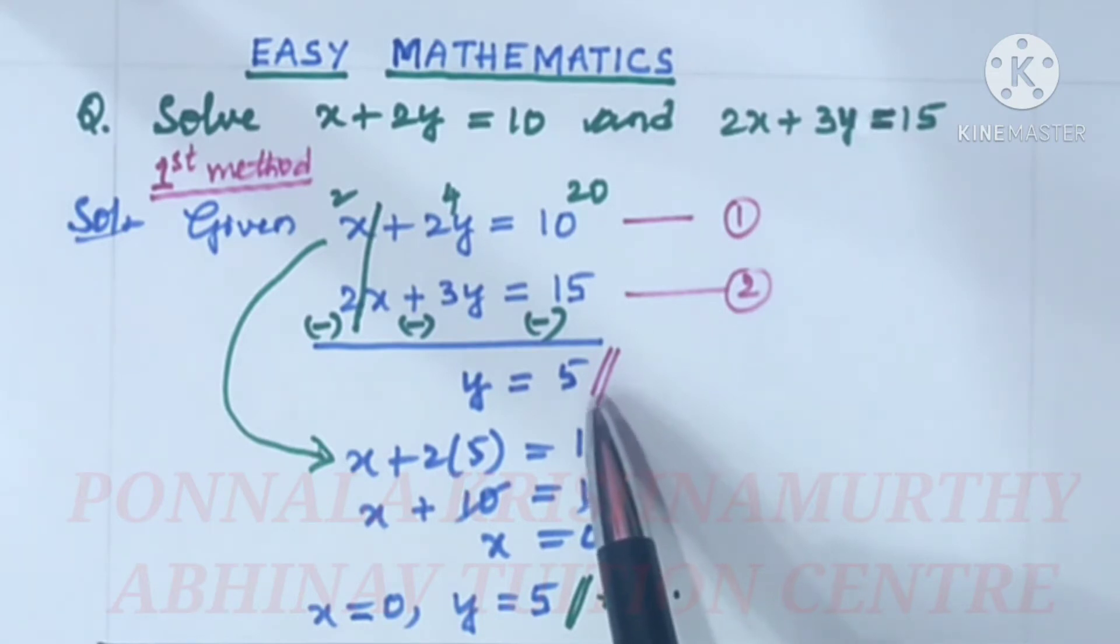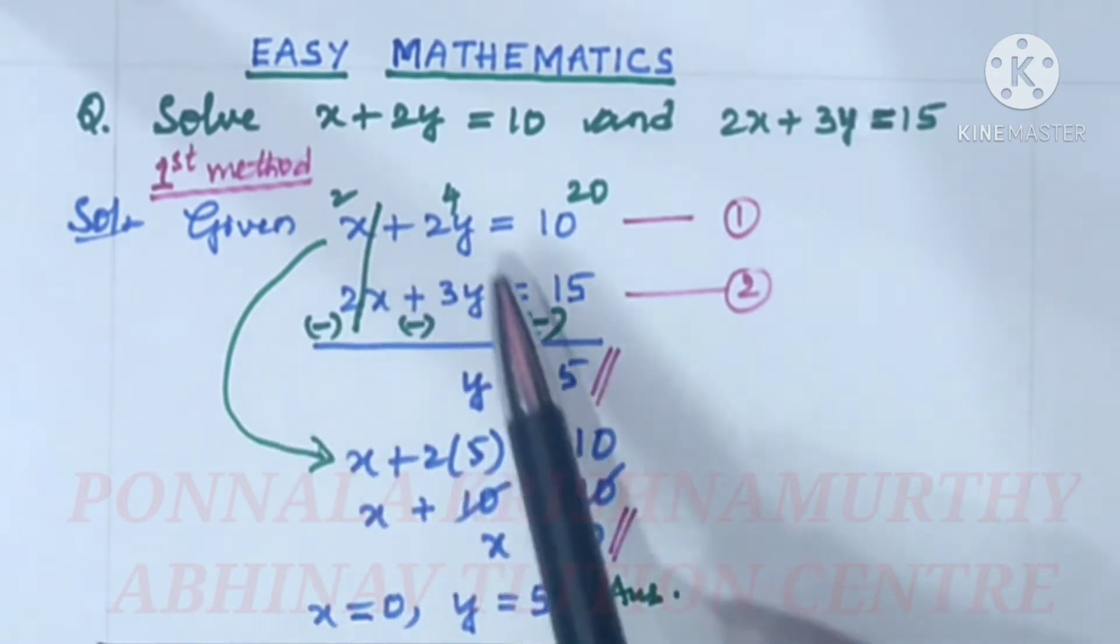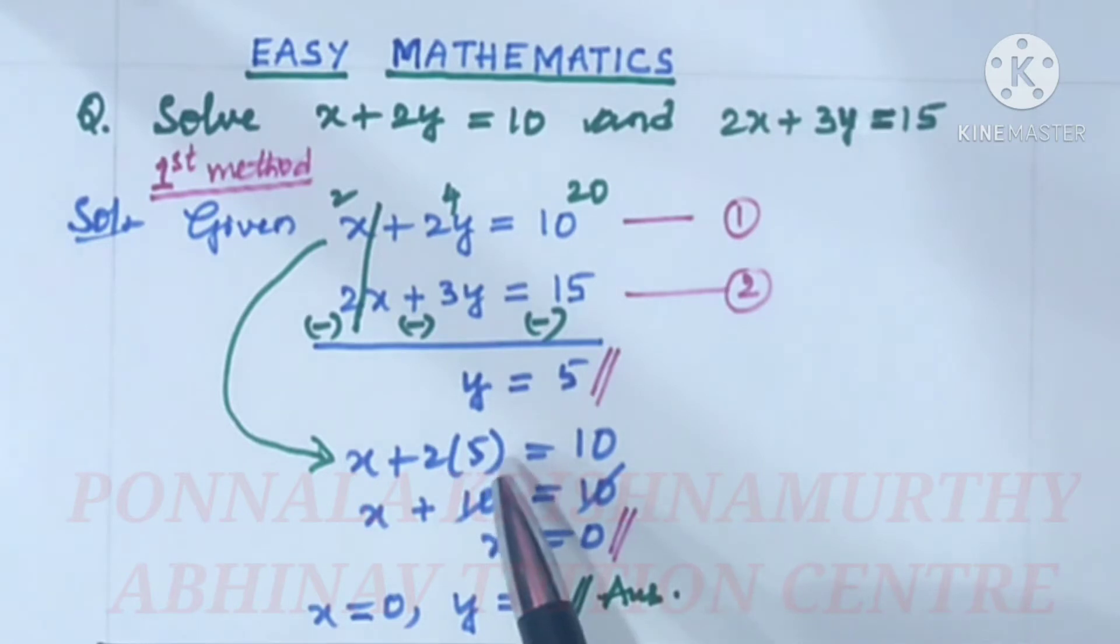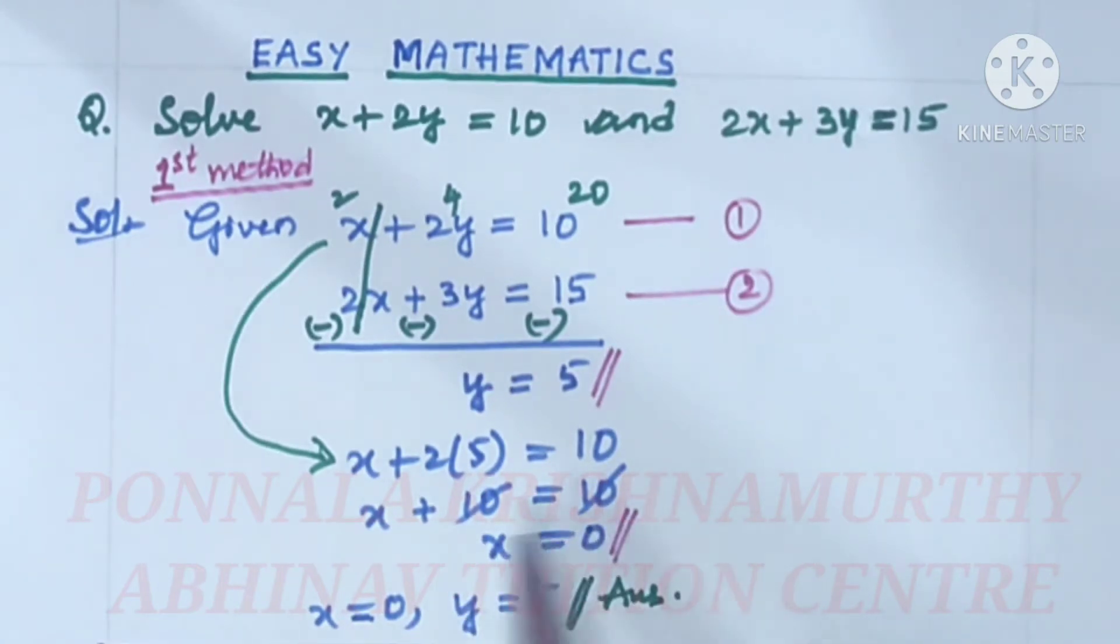Substituting this value in equation 1, x plus 2 into and place of y, we substitute 5 is equal to 10. x plus 10, 2 times 5 is 10, is equal to 10. Plus 10 and plus 10 cancel on either sides.